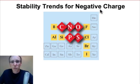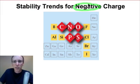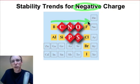Let's begin to establish some trends about the stability of charge among the P-block elements. Starting with negative charge, as we travel across the periodic table, these elements have an increasing ability to stabilize negative charge because of electronegativity.